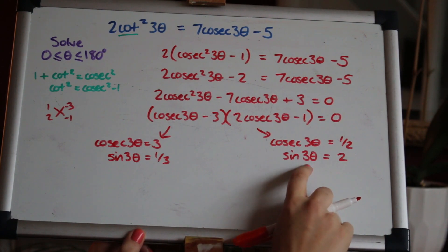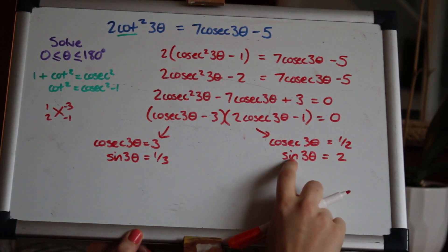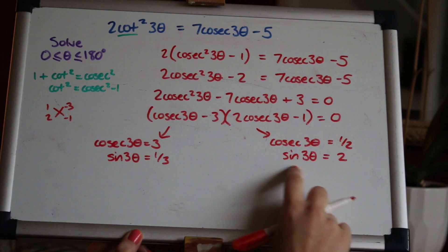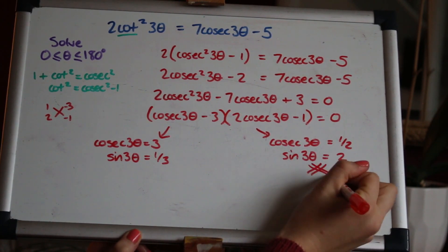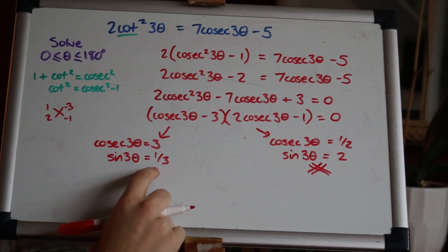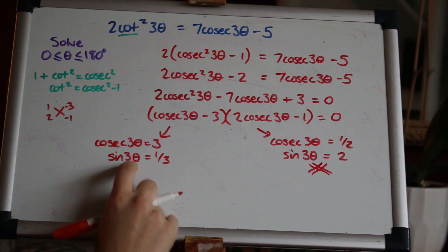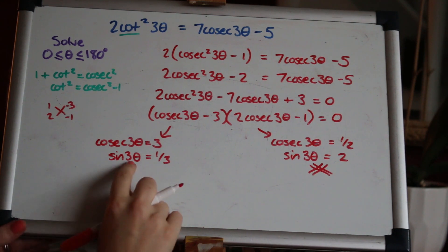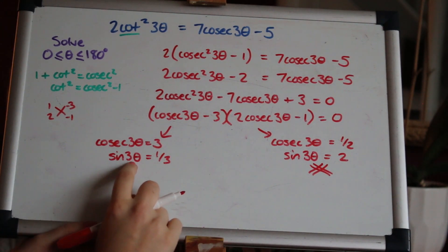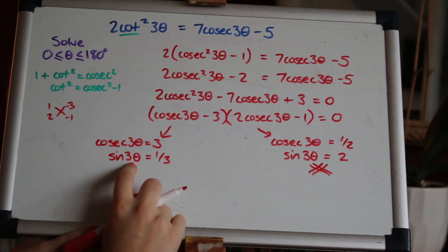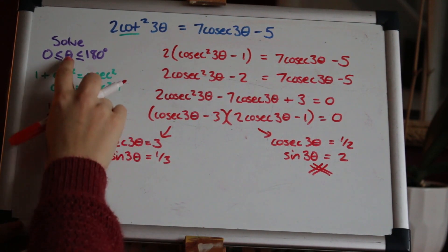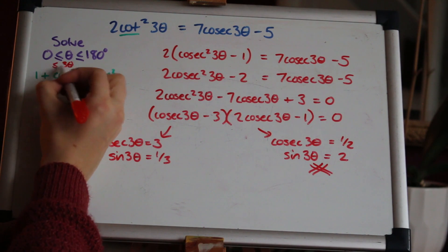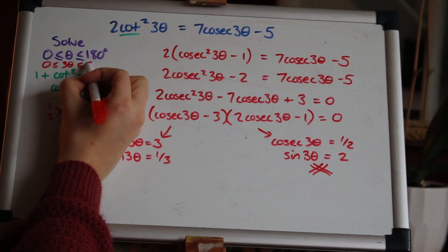Now sine and cos only have solutions up to one so if you did the inverse sine of two you'll get math error on your calculator and that's not going to have any solutions. That's a dead end to that one, but this one will have solutions: sin3θ = 1/2. And it's going to have quite a few solutions because it's three theta and our range is θ between 0 and 180°, but what you can do here actually, a little trick to see what you're looking for when you first do the inverse of sine, is think about three theta. So θ is up to 180 but if we times everything there by three we'd have 540°.